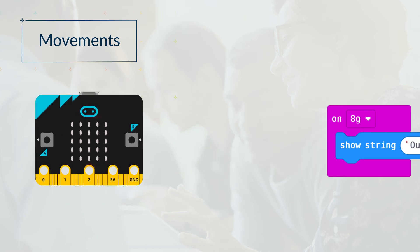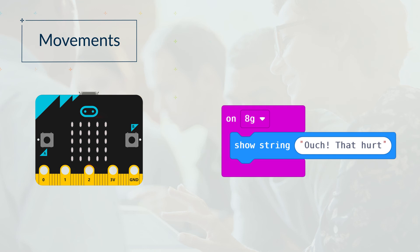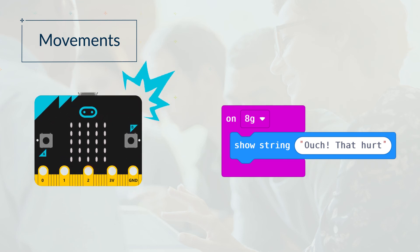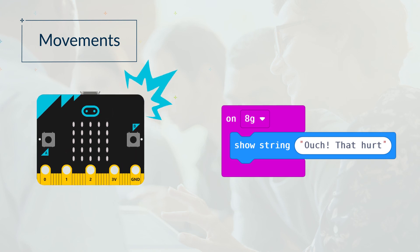The second one is checking to see whether a g-force of 8G has been experienced. As soon as it has, the microbit will output: Ouch!